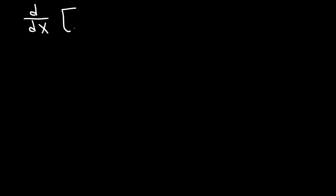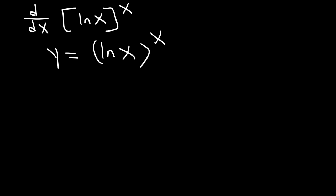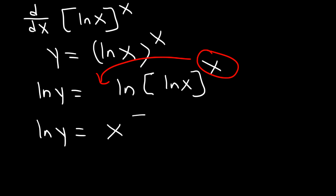Here's another problem: find the derivative of ln x raised to the x. The first step is to set y equal to ln x raised to the x. The second step is to take the natural log of both sides: ln y equals ln of (ln x) raised to the x. The third step is to move the exponent to the front: ln y equals x times ln of ln x.